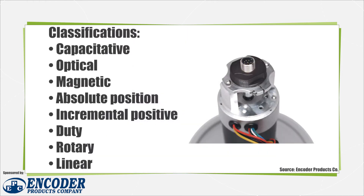There are several common ways to classify encoders. One is the method of sensing, such as capacitive, optical, or magnetic. Another is whether the position output from the encoder is absolute or incremental. Another parameter is how much force the encoder can handle on the shaft, so there are light-duty, medium-duty, and heavy-duty encoders.